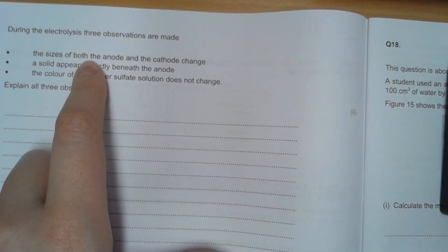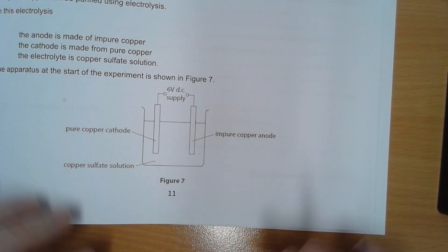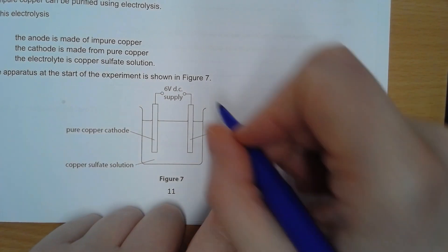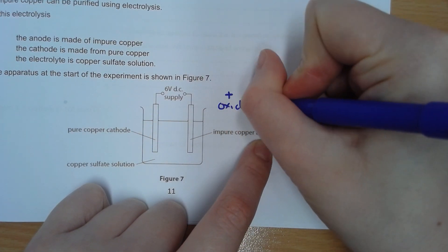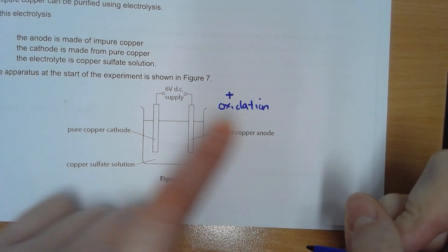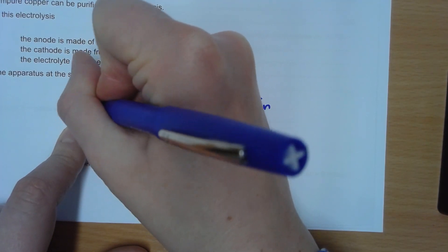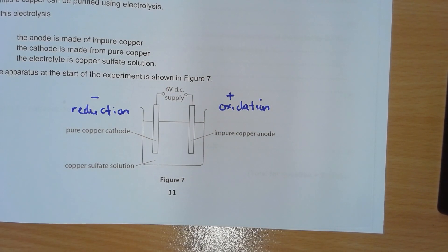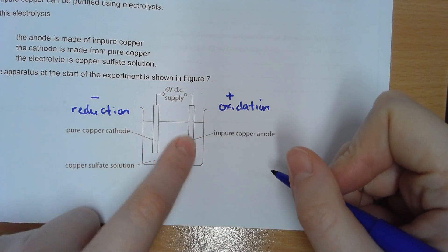The question asks you to explain three observations. The first is that the size of both the anode and the cathode change - the bulk of your marks comes from explaining that. The only facts you need to know are: the anode is positively charged and oxidation takes place at the anode. From that, the opposite follows - the cathode is negatively charged and reduction occurs there.